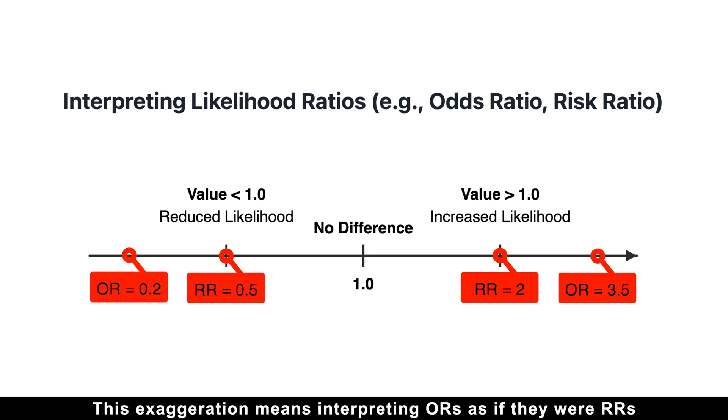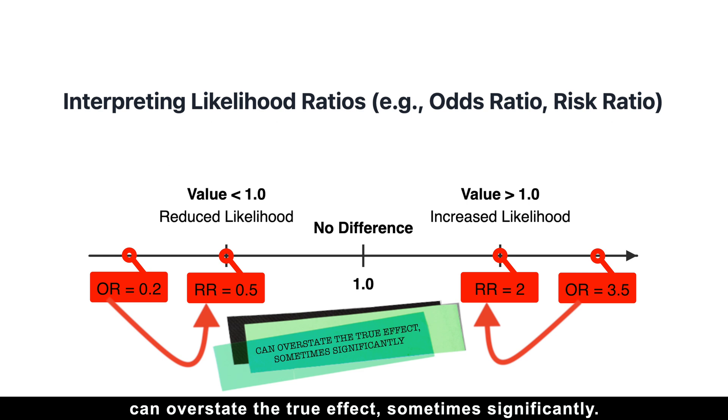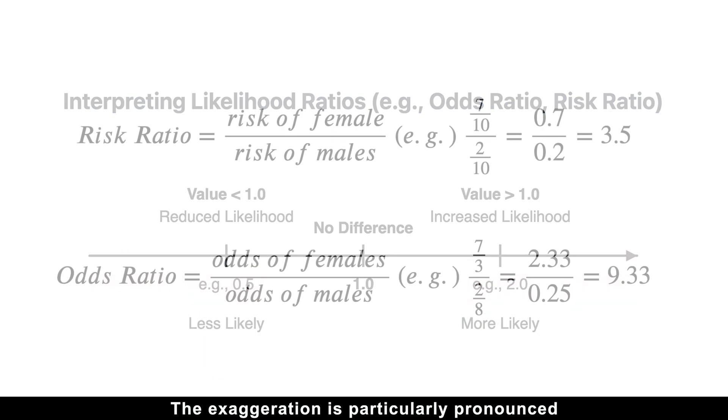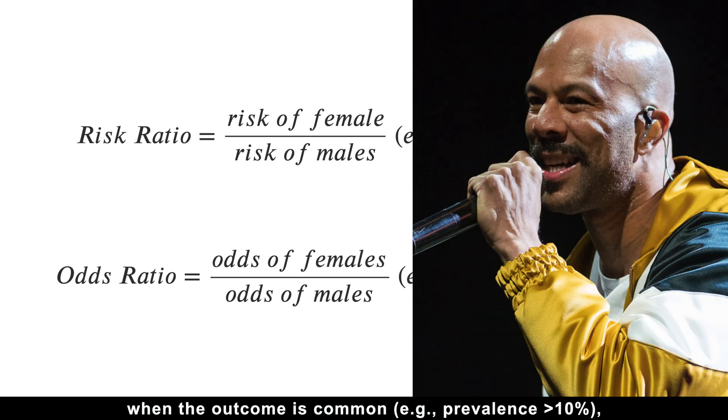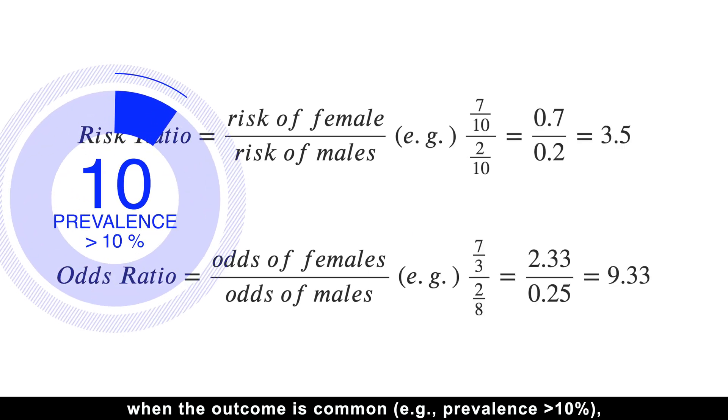And this exaggeration means interpreting odds ratios as if they were risk ratios can overstate the true effect, sometimes significantly. And the exaggeration is particularly pronounced when the outcome is common, which means prevalence is above 10%,